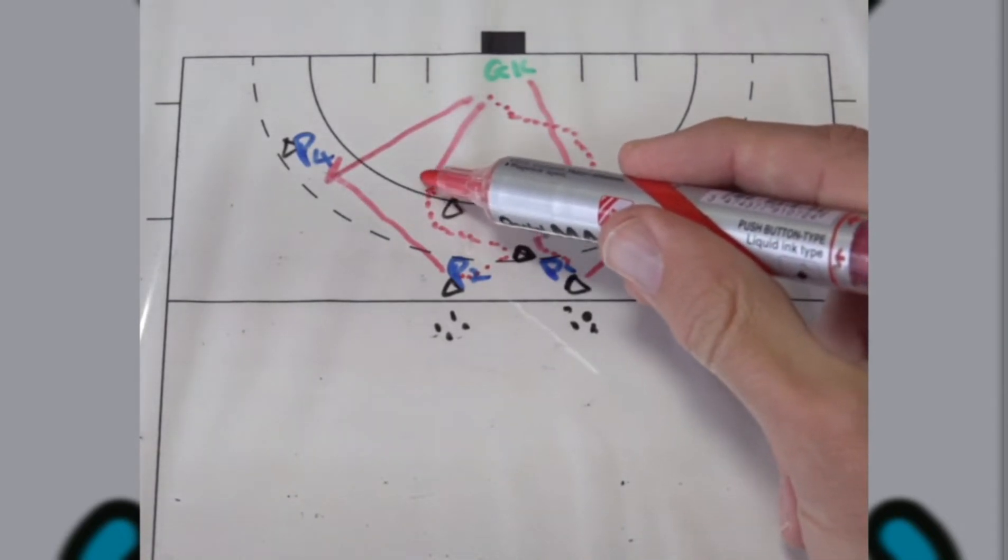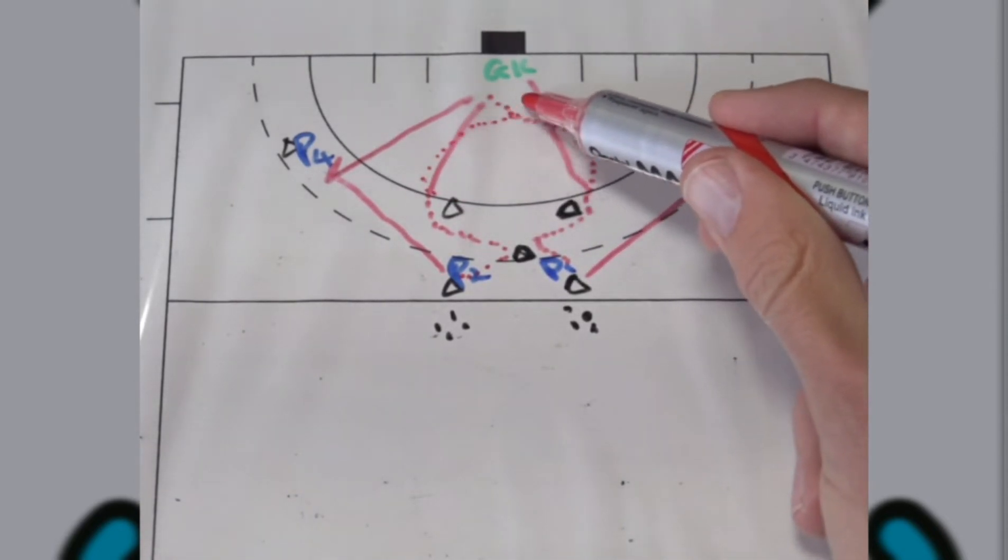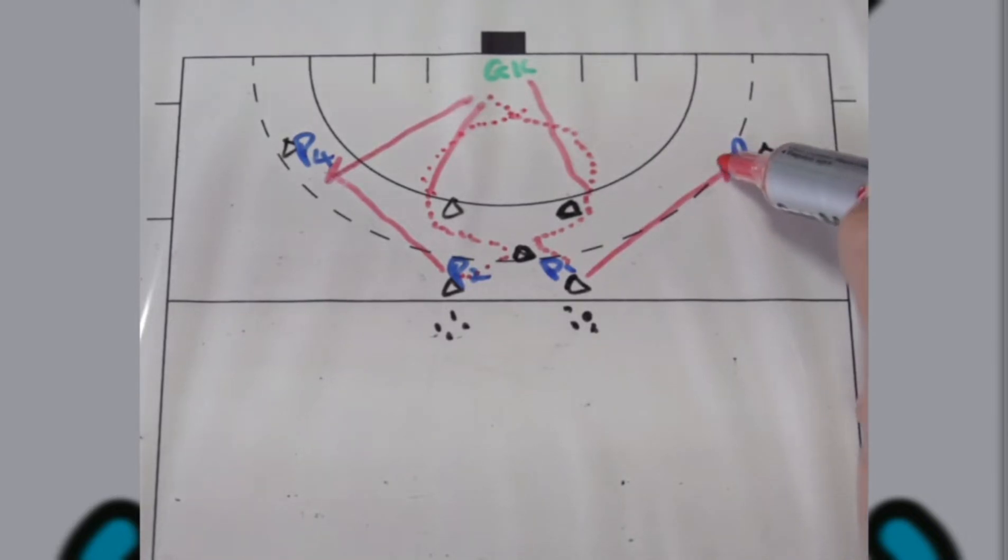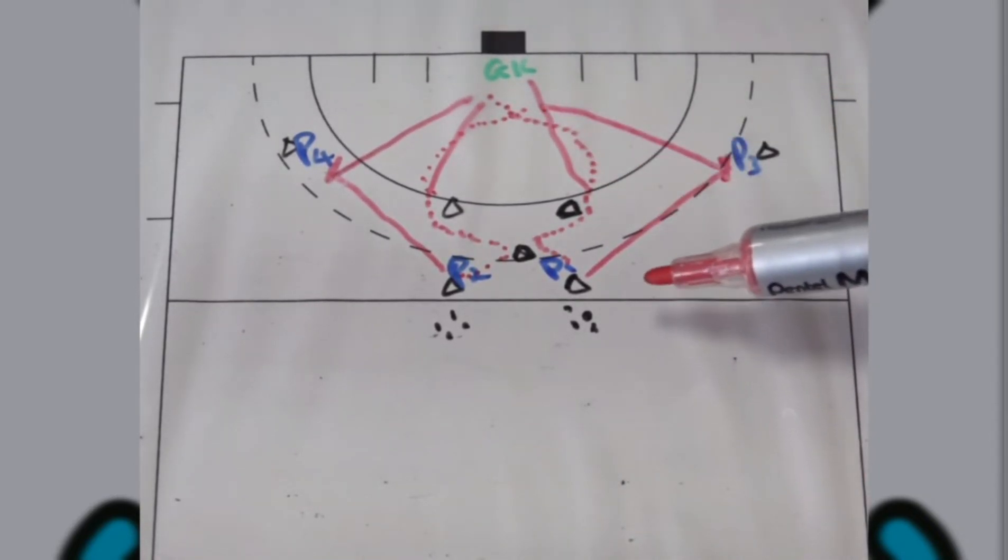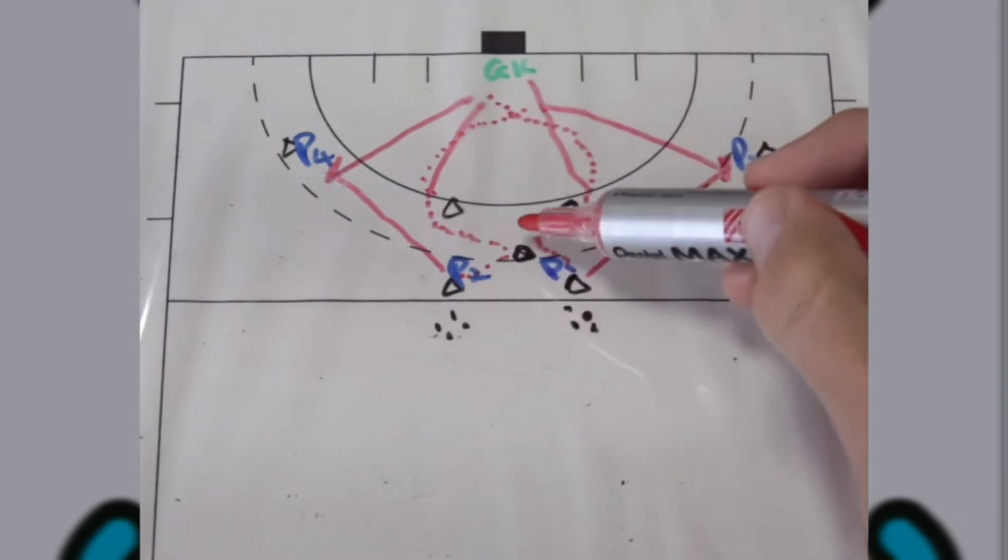After they took the shot, they will then try and get into that zone where the deflection will take place with the ball that player three will play into the circle for player two to deflect.